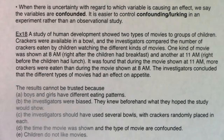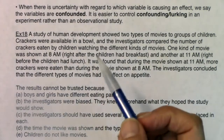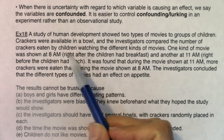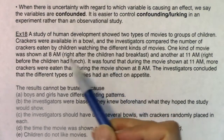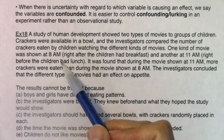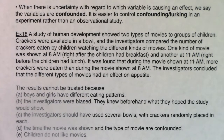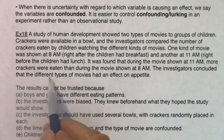So a study of human development showed two types of movies to groups of children. Crackers were available in a bowl and the investigators compared the number of crackers eaten by children watching the different kinds of movies. One kind of movie was shown at 8 a.m. right after the children had breakfast, and another was shown at 11 a.m. right before the children had lunch. It was found that during the movie shown at 11 a.m., more crackers were eaten than during the movie shown at 8 a.m. The investigators concluded that the different types of movies had an effect on appetite.